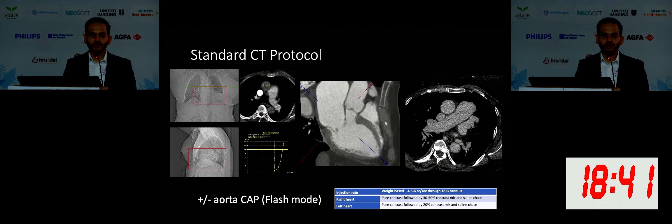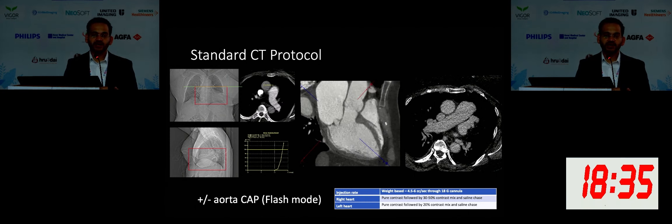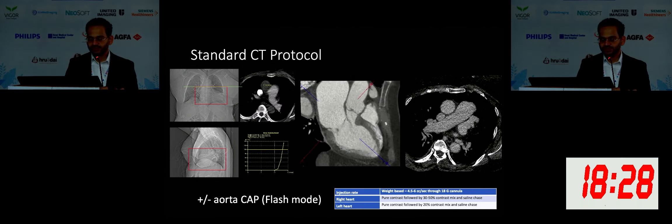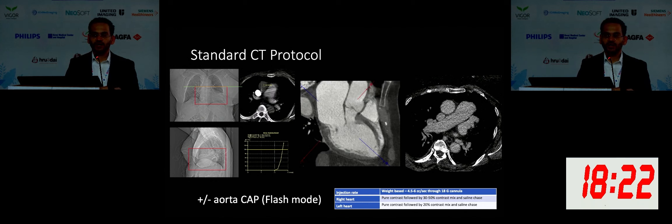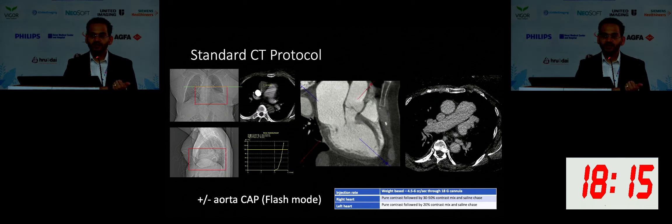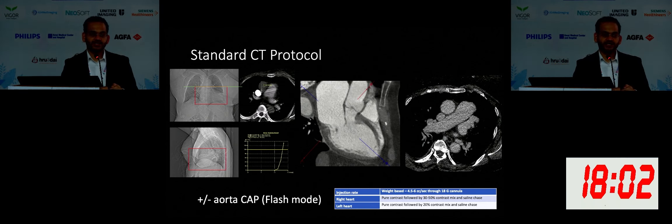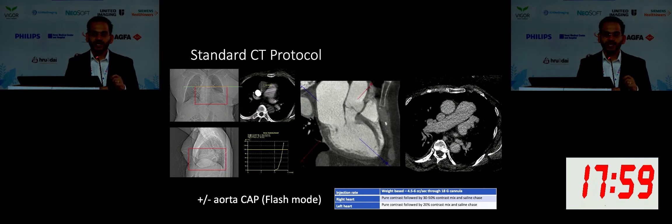Delayed images are typically acquired at one minute. But if you're also looking for scar, as we saw in the talk yesterday, then we can obtain additional delayed images. With regards to gating, it is important to choose it ahead of time. Patients who have bradycardia — retrospective gating is not a good choice because their R-to-R interval is very large and you're going to give them a lot of radiation dose. For valve planning and evaluation of valves, our default mode of gating is retrospective.